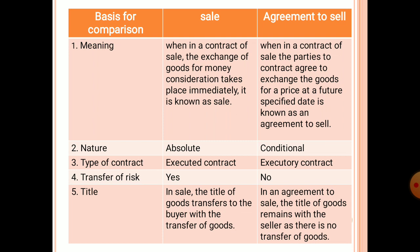Fourth is the transfer of risk: in sale, there is risk; in agreement to sell, there is no risk. Fifth is the title: in sale, the title of goods transfers to the buyer with the transfer of goods. In agreement to sell, the title of goods remains with the seller as there is no transfer of goods.